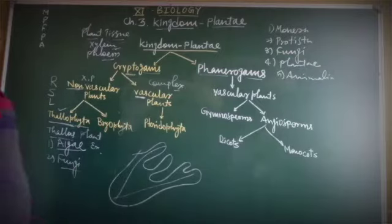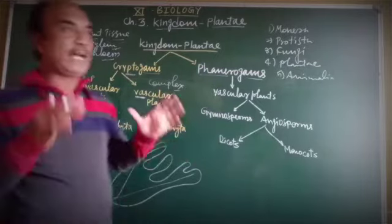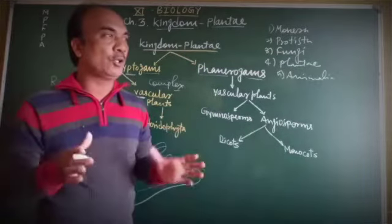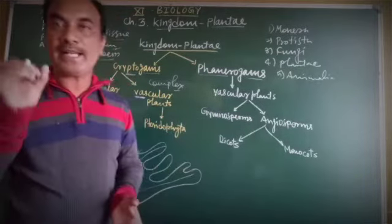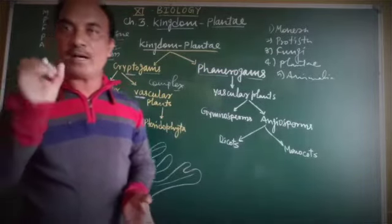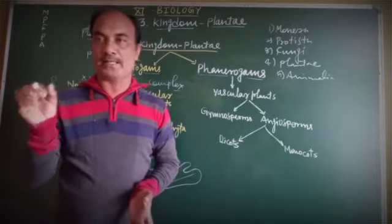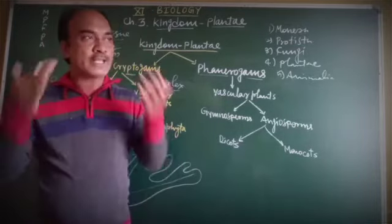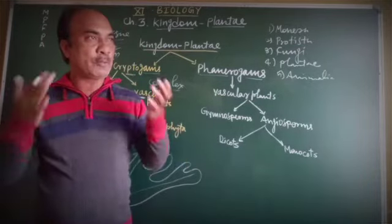Fungi are plants that grow on dead and decaying organic matter. For example, mushrooms — an umbrella-shaped structure that grows on plant remains. Another example: if you leave bread in a bag for one or two days, fungi grow on it.